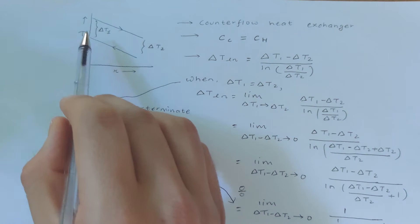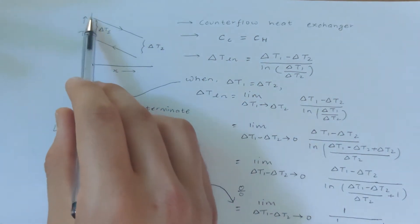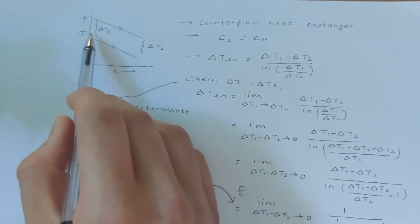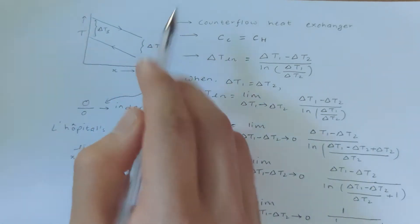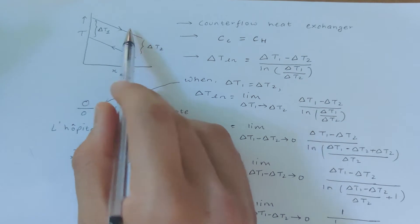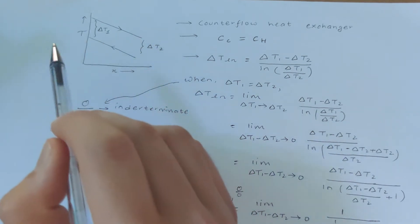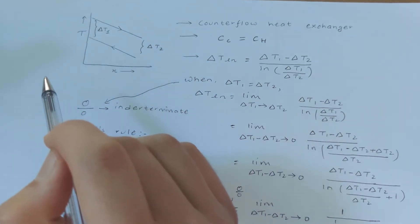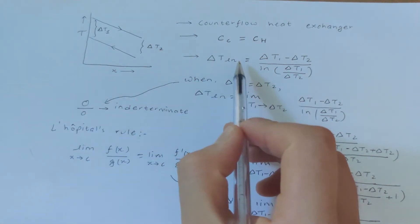Delta T1 is the temperature difference on the left-hand side — the difference between the inlet of the hot fluid and the outlet of the cold fluid. Similarly, Delta T2 is the temperature difference between the outlet of the hot fluid and the inlet of the cold fluid.